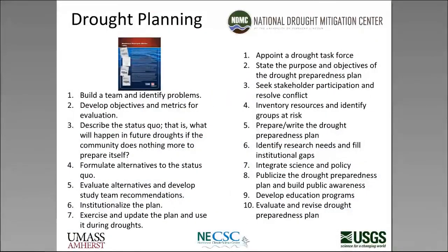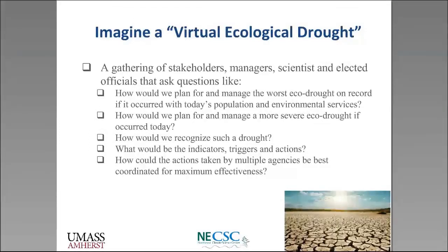To finish, drought planning is a structured approach. It involves engaging stakeholders to understand what's important in a region, establishing current conditions and likely future conditions, and looking at a wide range of alternatives. These things typically can only be done with the aid of some sort of computer simulation model. I would encourage managers to consider the process of a virtual ecological drought.